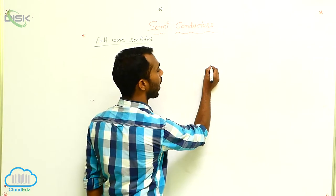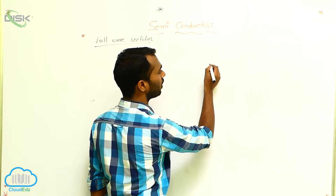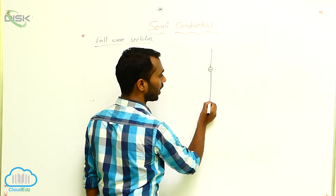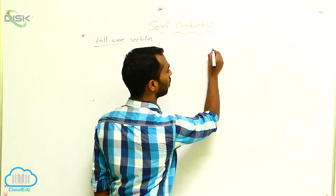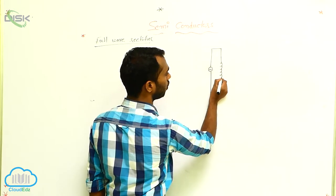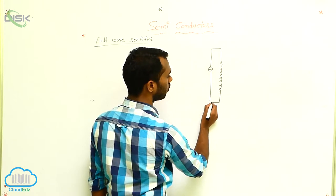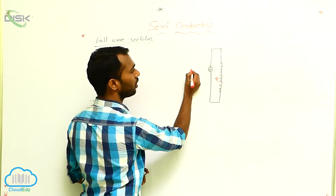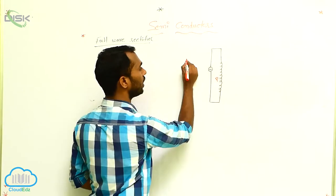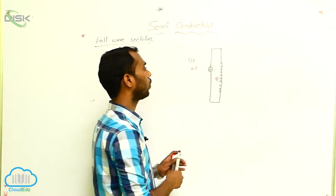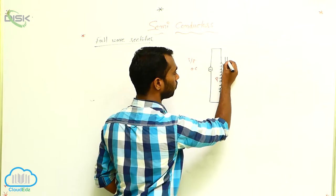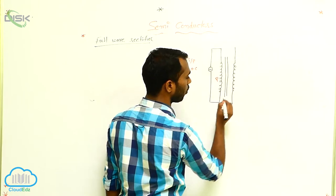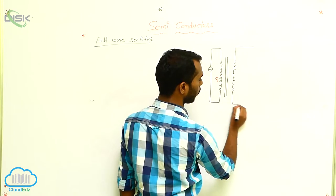Here I am drawing the circuit diagram. We must have an AC power source. We connect the AC power source to a transformer. This is the primary coil of the transformer. The input is AC. Then we take the secondary coil of the transformer and connect the diodes there.